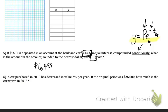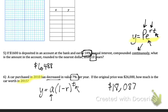Number 6 is also a growth and decay equation. A car purchased in 2010 has decreased in value 7% per year. If the original price was $26,000, how much is the car worth in 2015? So you're going to use your decay equation here. So A is how much it started costing to begin with. R, make sure that you move your decimal to the left twice. Make sure there's a minus sign since it's decay. And T is going to be how many years have passed from 2010 to 2015. So don't plug in 2015 right there. Your final answer for this problem should be $18,087.90.